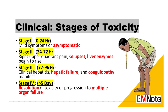Clinical presentation. Acute paracetamol poisoning has four stages of toxicity. Stage 1, 0 to 24 hours: anorexia, nausea, and vomiting are common. Patients may be asymptomatic or experience mild nausea, vomiting, malaise, and diaphoresis.